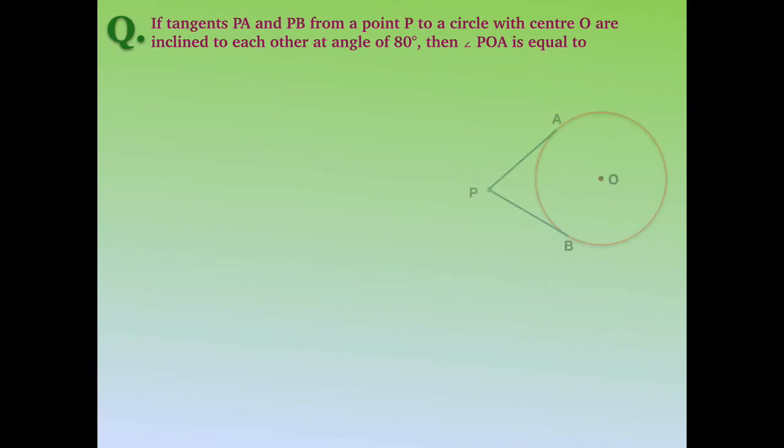Now let us apply these theorems to solve some questions. The first question says: if tangents PA and PB from a point P to a circle with center O are inclined to each other at 80 degrees, find angle POA.